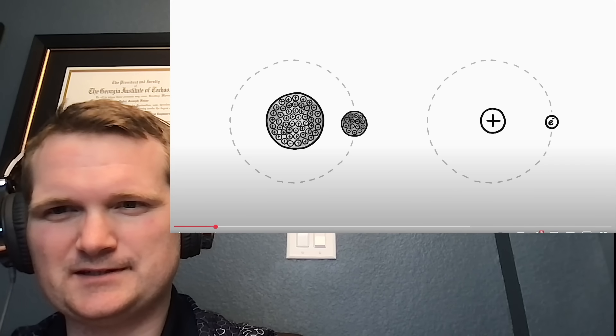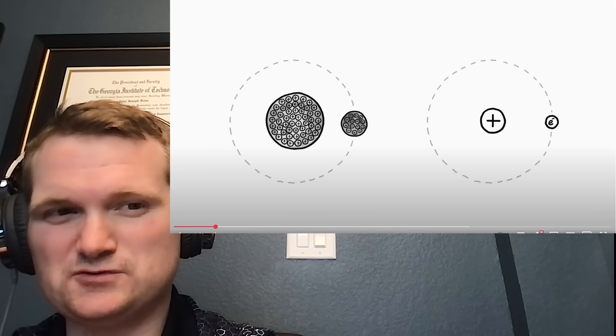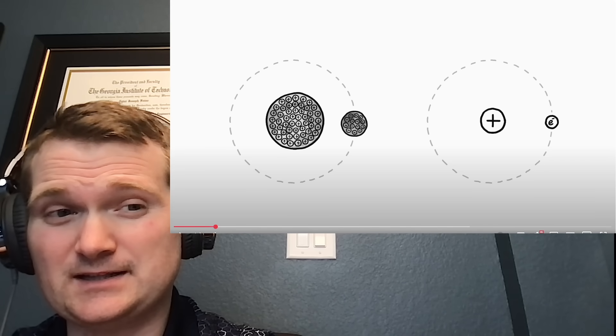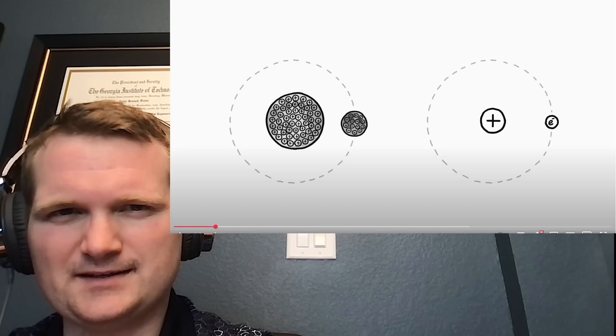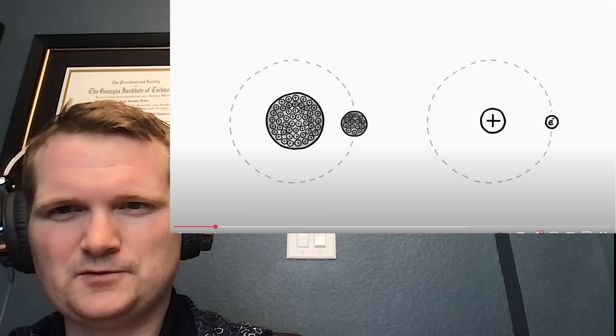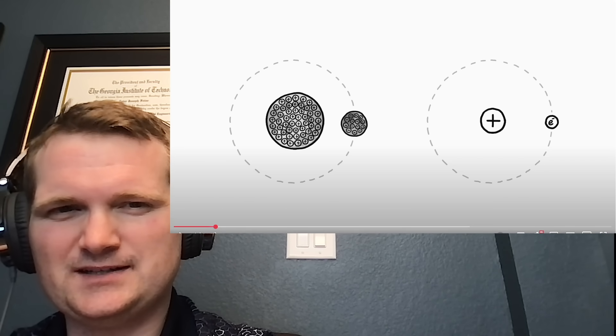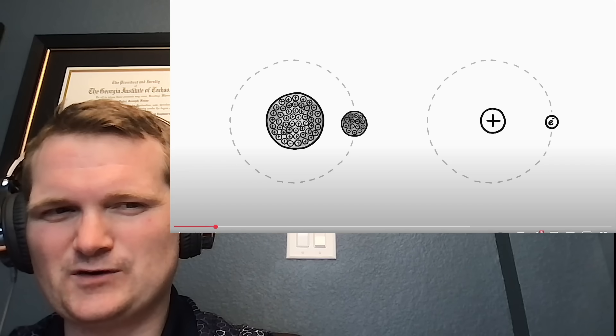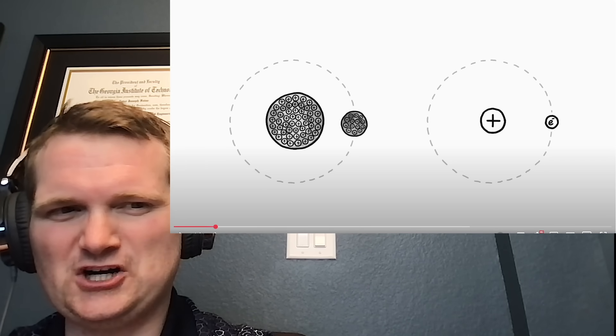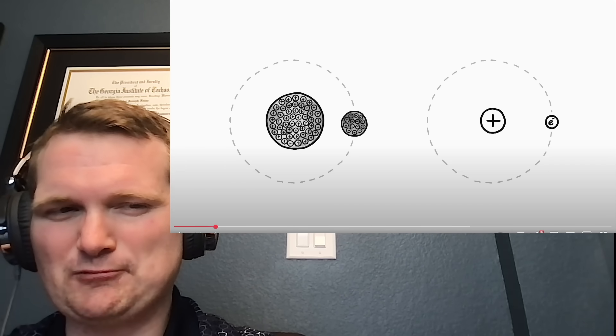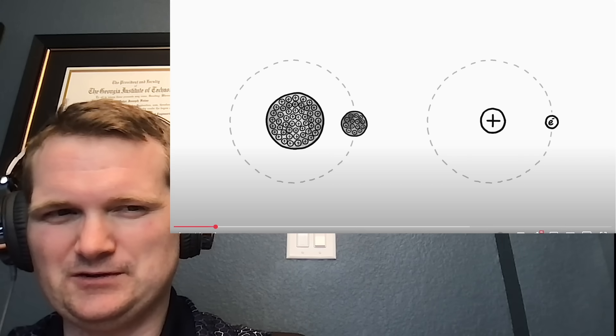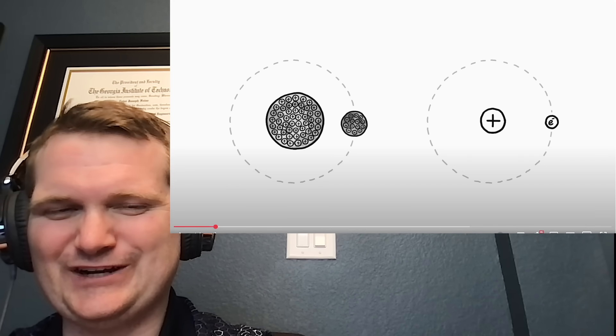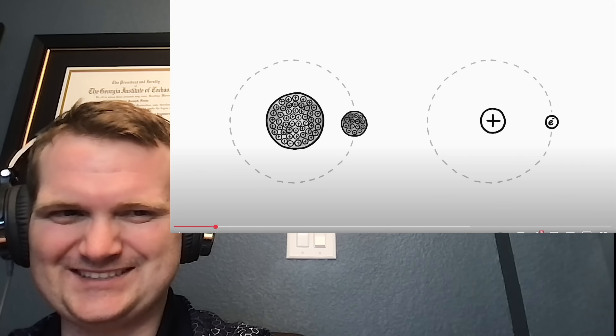Electrons don't orbit protons like moons. They form probability clouds in quantum mechanics. Saying the moon would orbit an electron is a bit like saying an aircraft carrier would float on steam because steam and water both happen to be H2O. They're connected, but very different regimes of physics.